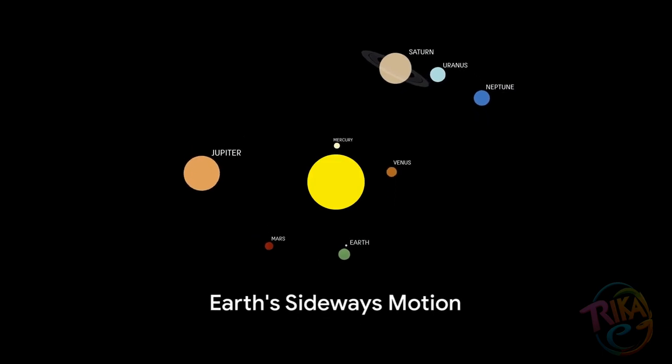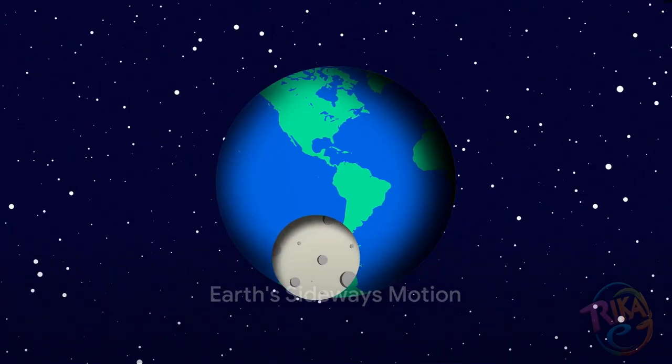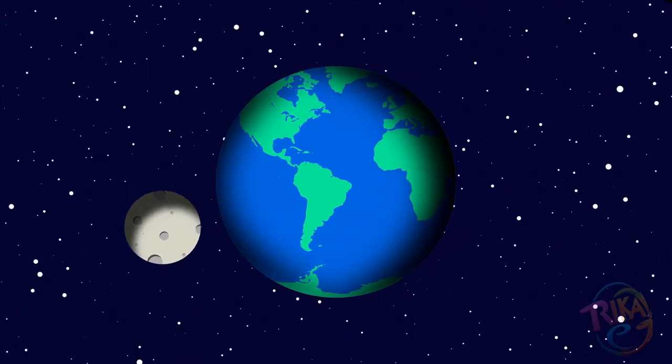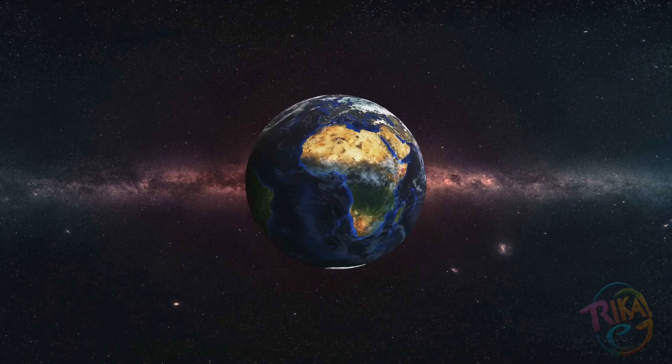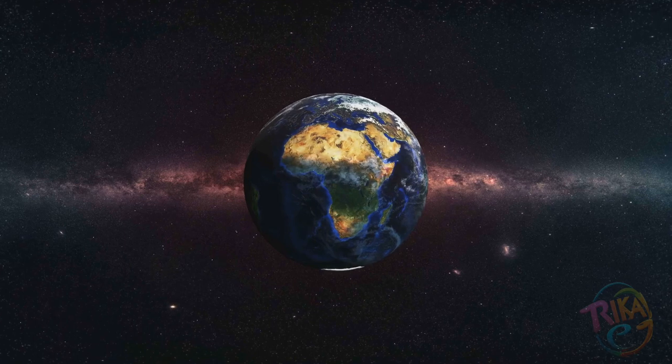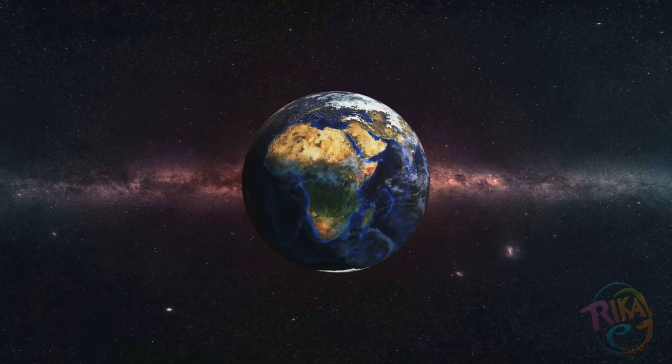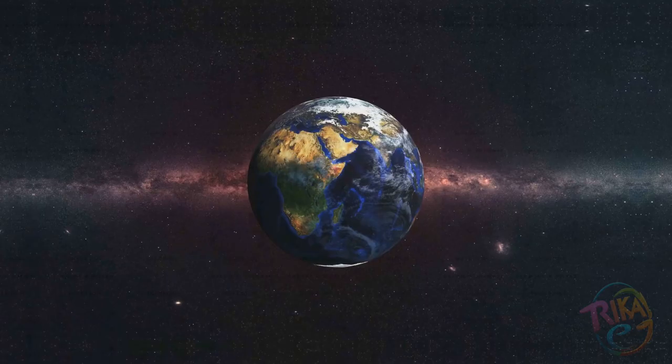However, the Earth isn't just falling toward the Sun. It's also moving sideways at an incredible speed, approximately 67,000 miles per hour. This combination of falling towards the Sun due to gravity and moving sideways results in the Earth moving in a curved path or an orbit.